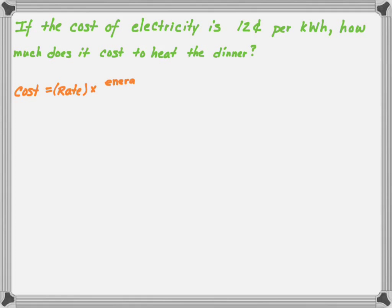The relationship is cost equals the rate times the energy used. The rate is 12 cents. The amount of energy used is 0.13 kilowatt hours. That gives me 1.56, but I want that in one significant figure, so the answer is going to be 2 cents. It costs 2 cents to heat the dinner.